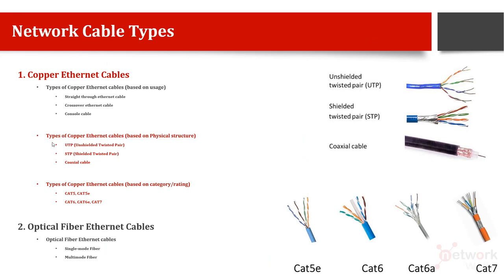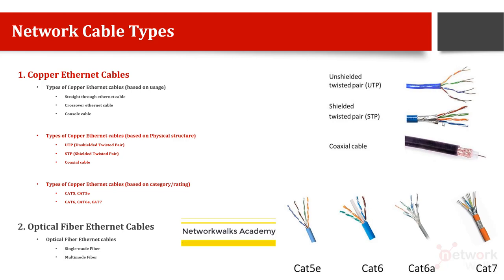We can also classify copper cables based on their physical structure: UTP (Unshielded Twisted Pair), STP (Shielded Twisted Pair), and Coaxial cable. STP is slightly more expensive than UTP because it has an extra shield to reduce interference. Coaxial cable is used for analog communication and has multiple layers of shielding.